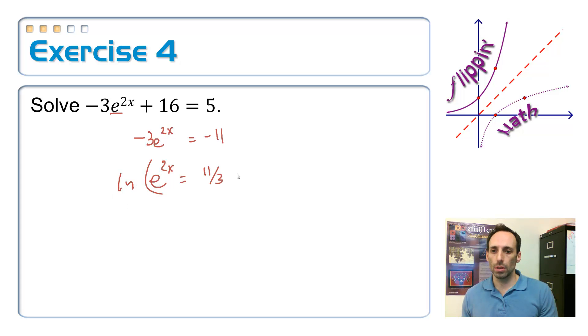On the left-hand side, the natural log and the e will cancel out, because they're inverses, leaving me with 2x. On the right-hand side, nothing will cancel out, and I just have the natural log of 11 divided by 3.